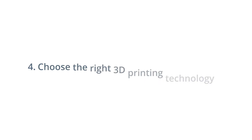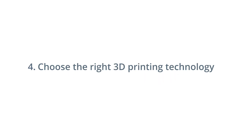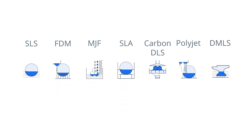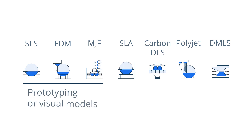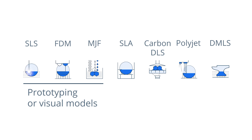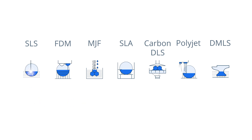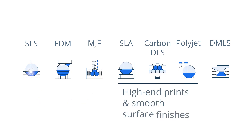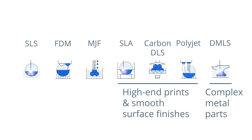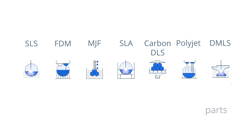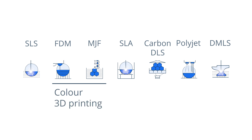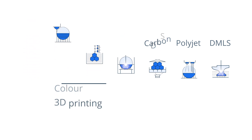Number four: choose the right 3D printing technology. Select the most suitable technology based on your requirements. FDM, SLS, and MJF are more affordable technologies compared to processes like SLA, carbon DLS, and PolyJet. For prototyping or visual models, go for SLS, MJF, or FDM. For high-end prints with smooth surface finishes, go for SLA or carbon DLS. For color 3D printing, go for FDM or MJF, or use post-processing.